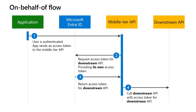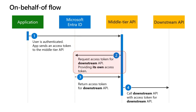Now let's see how it works. After users are authenticated on an application, the application acquires an access token to call the first API — we will call this the middle tier API. The access token with the corresponding permissions is passed in the HTTP request as a bearer token. To be able to invoke the downstream API, the middle tier API calls the Microsoft Entra ID token endpoint to exchange the access token it received with a new one that fits the downstream API permissions. Microsoft Entra ID then issues a new access token on behalf of the user with the required permissions and audience.